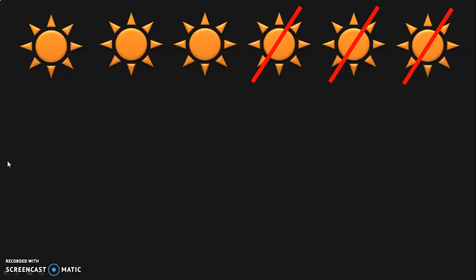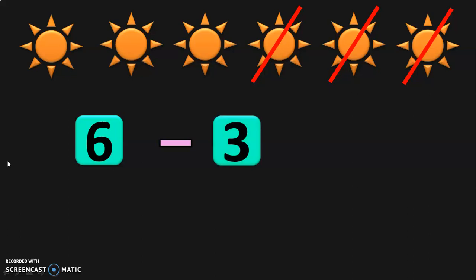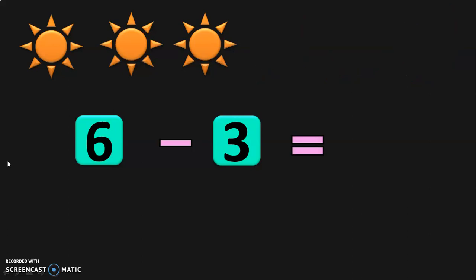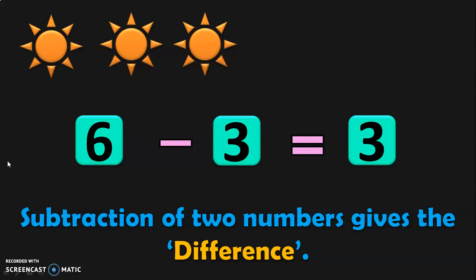Let us now represent this in the form of numbers. You have 6 sun stickers with you and you gave away 3 stickers to your brother or sister. What is the remaining number of stickers with you now? 1, 2, 3. So you have 3 stickers remaining with you now. This is called subtraction using objects. The answer that you get in subtraction is called a difference. Just like the addition of two numbers gives you the sum, subtraction of two numbers gives you the difference.